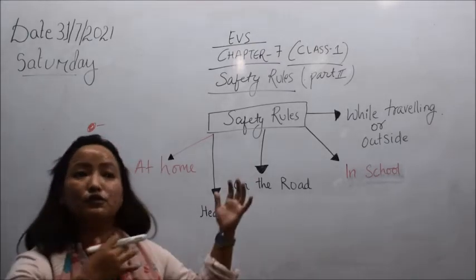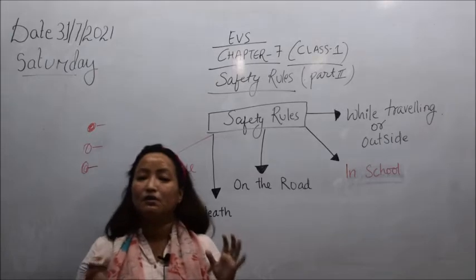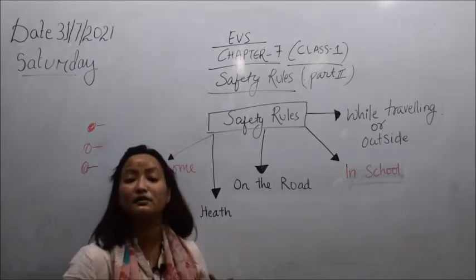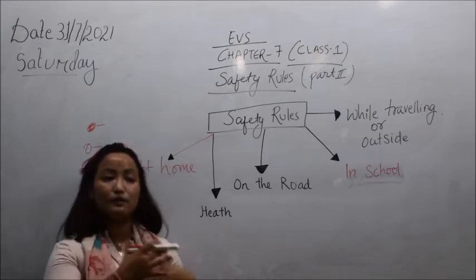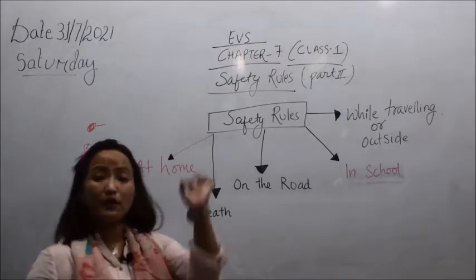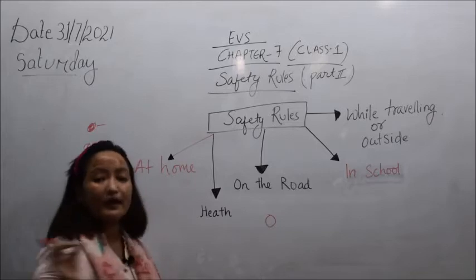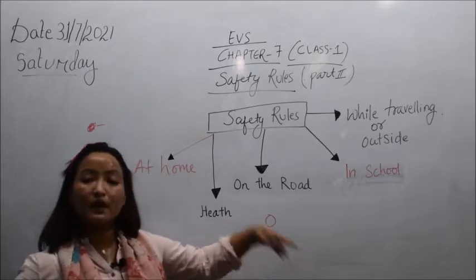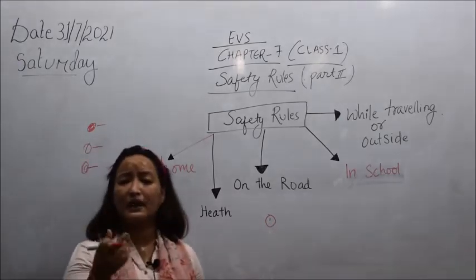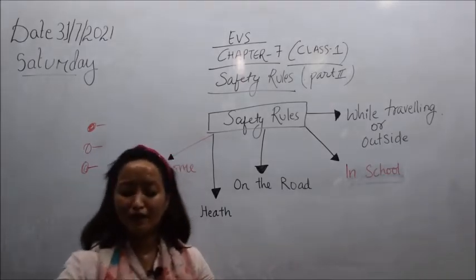Whatever we are doing, whatever we are thinking for the future, we should always keep in mind the positive and negative side of things. Like a coin — every coin has two sides: head and tail. Similarly, in life's decisions, there are both positive and negative sides.